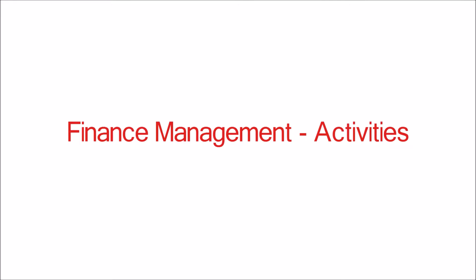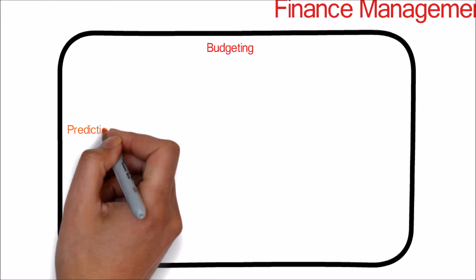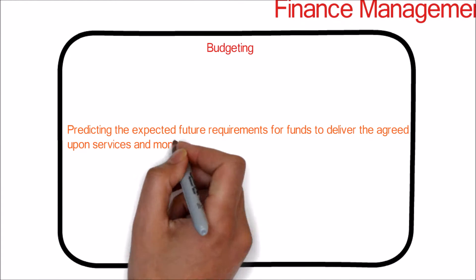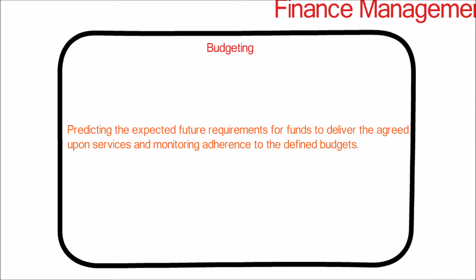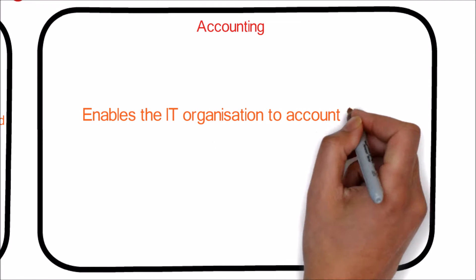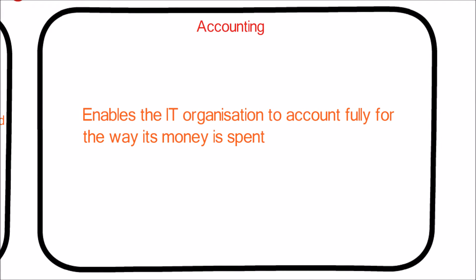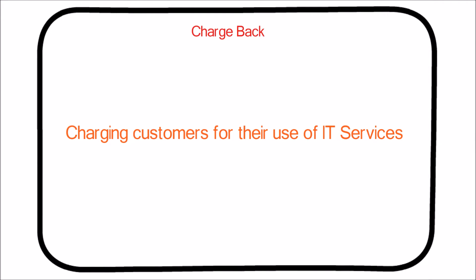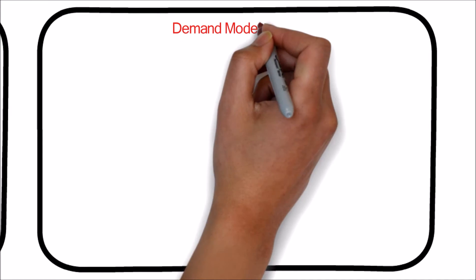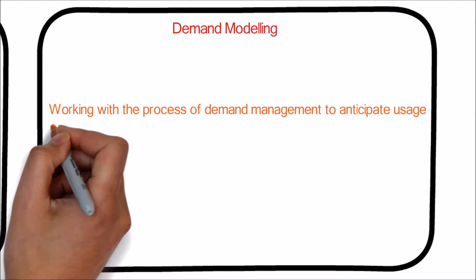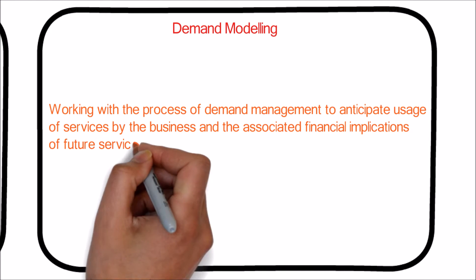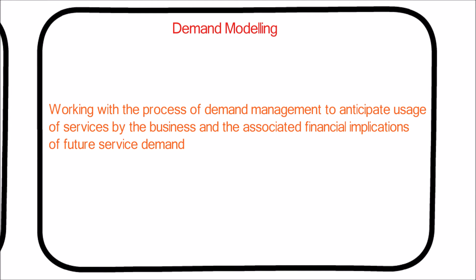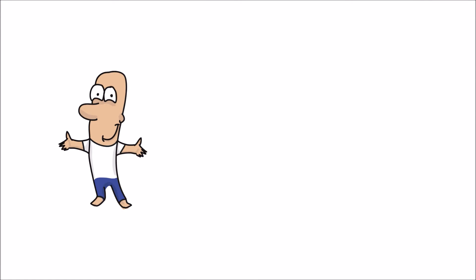Now we will look at the activities of the financial management process. Budgeting: predicting the expected future requirements for funds to deliver the agreed-upon services and monitoring adherence to the defined budgets. Accounting: enables the IT organization to account fully for the way its money is spent. Charge back: charging customers for their use of IT services. Demand modeling: working with the process of demand management to anticipate usage of services by the business and the associated financial implications of future service demand.